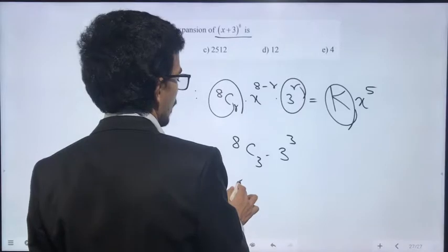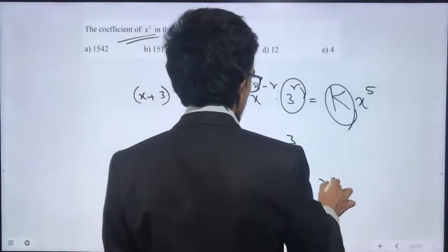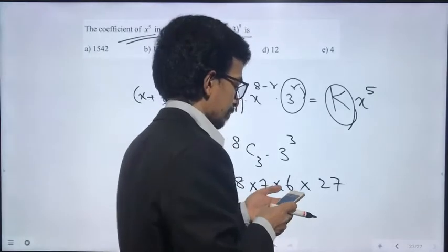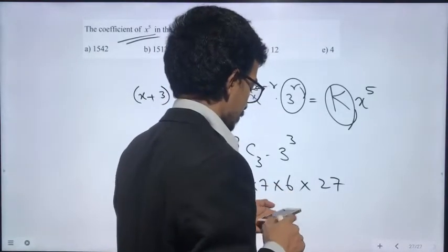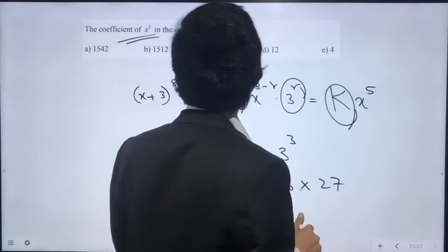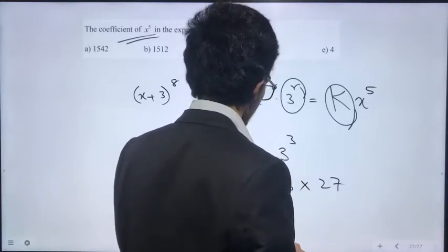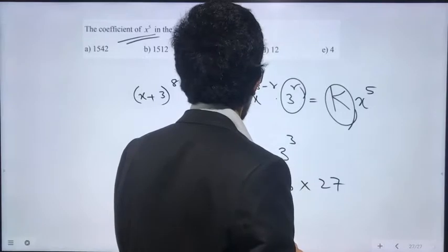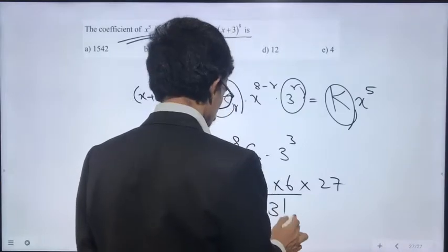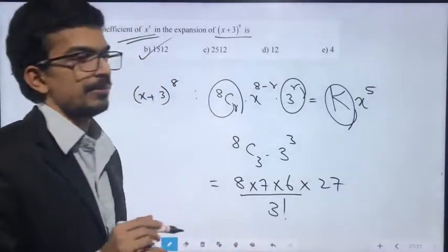8C3 × 3^3 equals (8 × 7 × 6) / (3!) × 27. Calculating: 8 × 7 × 6 by 3 factorial equals 1512.